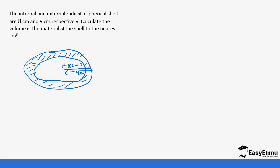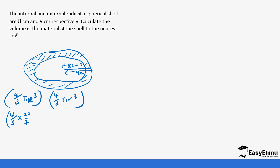We want to find the material used to make the shell — basically the shaded region between the two spheres. We need the volume of the bigger spherical shell minus the volume of the smaller one. This is going to be 4/3 πR³ minus 4/3 πr³. In this case: 4 over 3 times 22 over 7 times 9 times 9 times 9, minus 4 over 3 times 22 over 7 times 8 times 8 times 8.